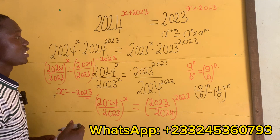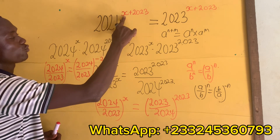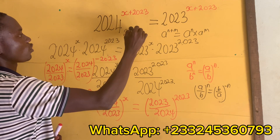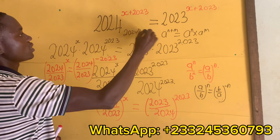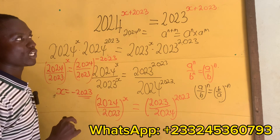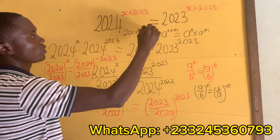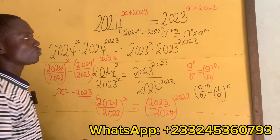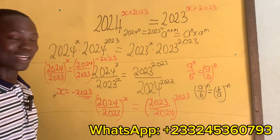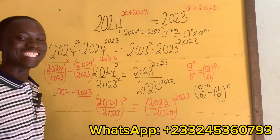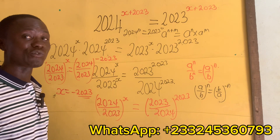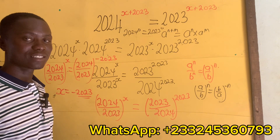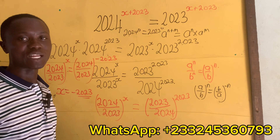Let's test this: if I put negative 2023 here, I have 2024 to the power zero, which equals 1. And if I put negative 2023 here, I get 2023 to the power zero, which is also equal to 1. So one equals one — verified! Thank you for watching. Please like my videos, share, comment, and follow me for more questions.